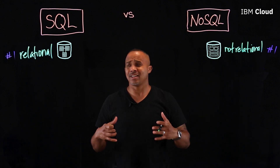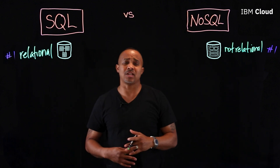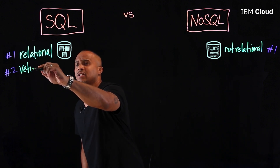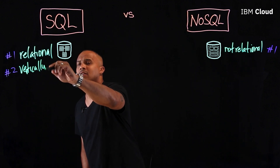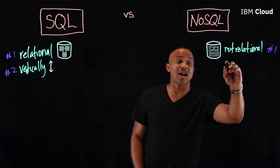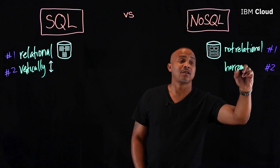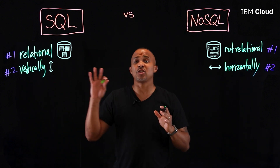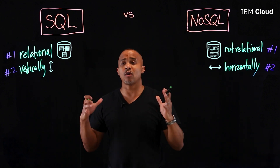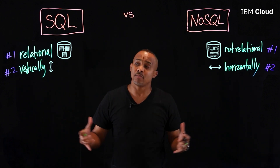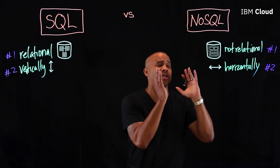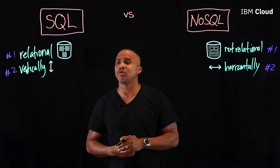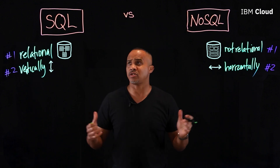As your database gets a lot of traffic and needs to grow, on the infrastructure side SQL servers are going to vertically scale, whereas NoSQL databases scale horizontally. SQL servers are backed by disk and need more memory and computing power to process all those transactions, whereas with NoSQL it's all in memory, and you can keep adding secondary nodes to handle and balance out the usage.